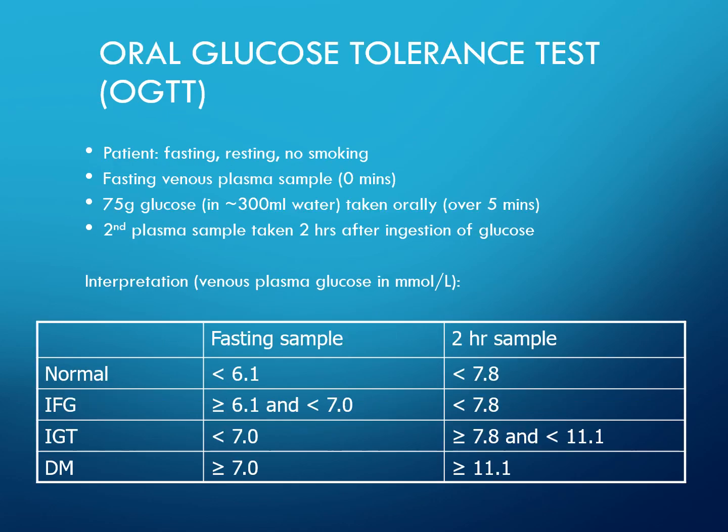For the oral glucose tolerance test, the patient must be fasting, resting, and not smoking. A fasting venous plasma sample is taken at 0 minutes. Then 75g of glucose in 300ml of water is taken orally over 5 minutes. A second plasma sample is taken 2 hours after ingestion, and the result is interpreted using the reference table.